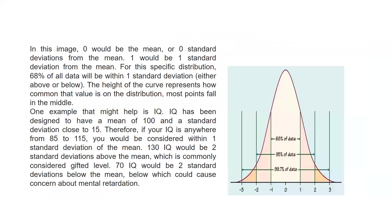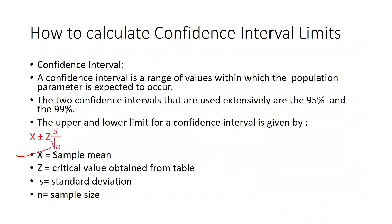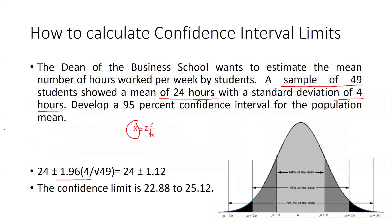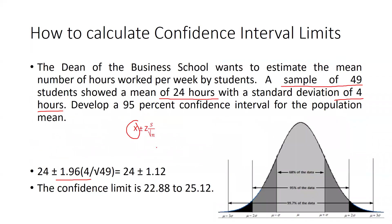Applying the formula: we use z = 1.96, s = 4 (the standard deviation given in the problem), and n = 49 (the sample size). So the formula becomes: 24 plus or minus 1.96 times 4 divided by the square root of 49.